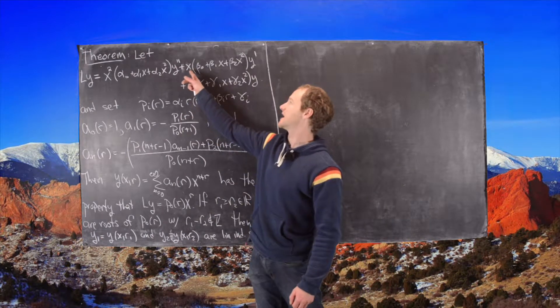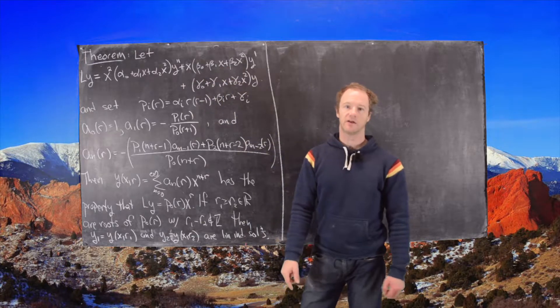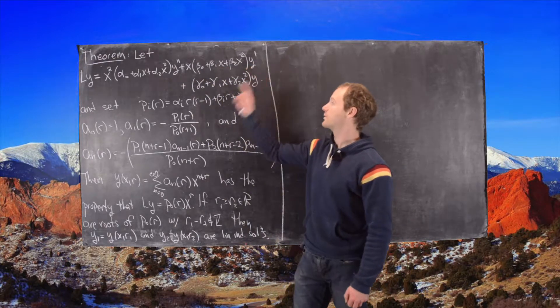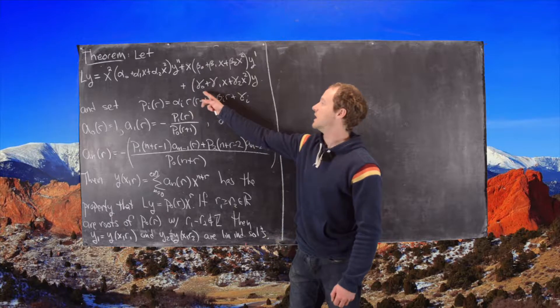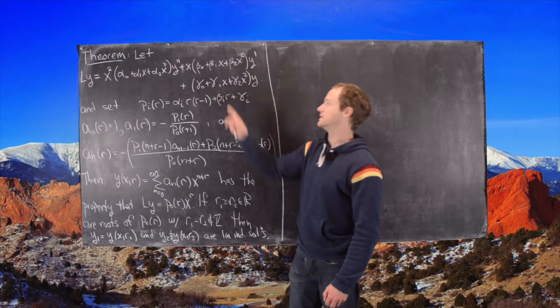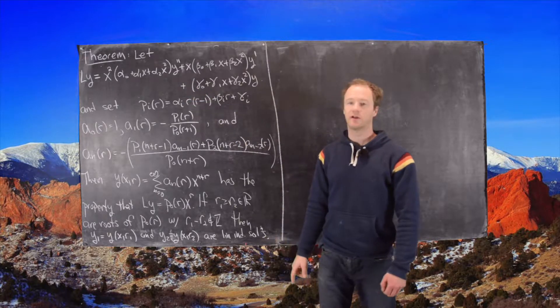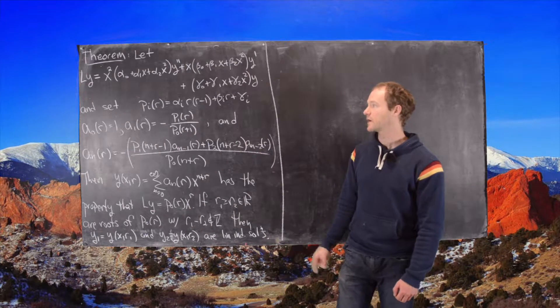and it acts on y by the following. So we have x squared times this quadratic polynomial with coefficients indexed by alpha, y double prime plus x, and then another quadratic polynomial with betas, y prime, and then finally the constant 1 times this quadratic polynomial with gamma times y. So that's our differential operator.